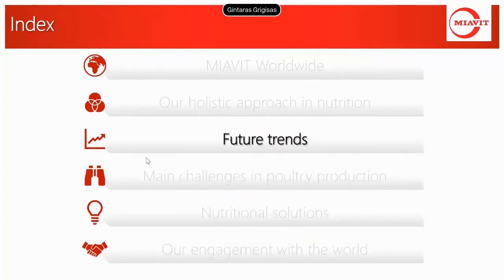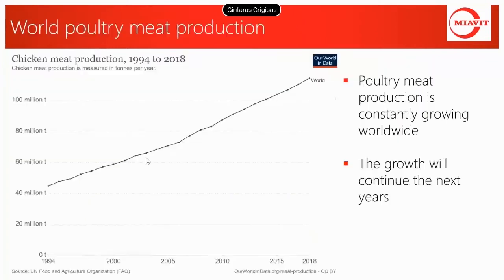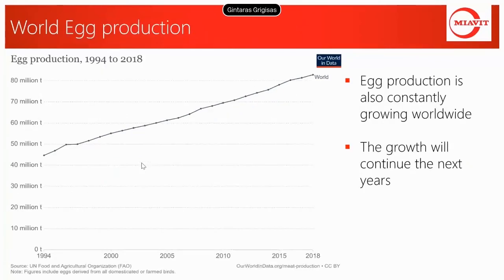So what will be the future trends we are already facing or will face in the next years? First of all, volume is increasing and will continue to increase. For the last 20 years, the production of chicken meat has increased more than 100%, and this growth rate will continue — slightly lower for developed countries but quite high for developing countries. Egg production is also constantly growing, with demand not only for shell eggs but increasingly for egg products for the food industry. Eggs are easy to produce, completely self-packed, need no further processing, have a good shelf life, and are a valuable protein source.